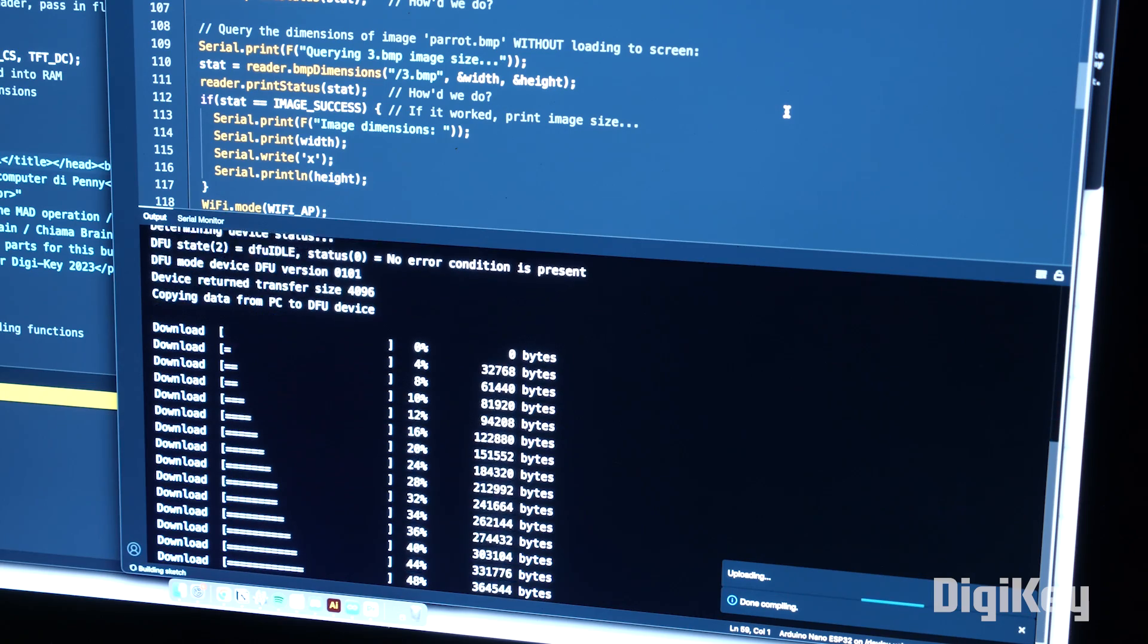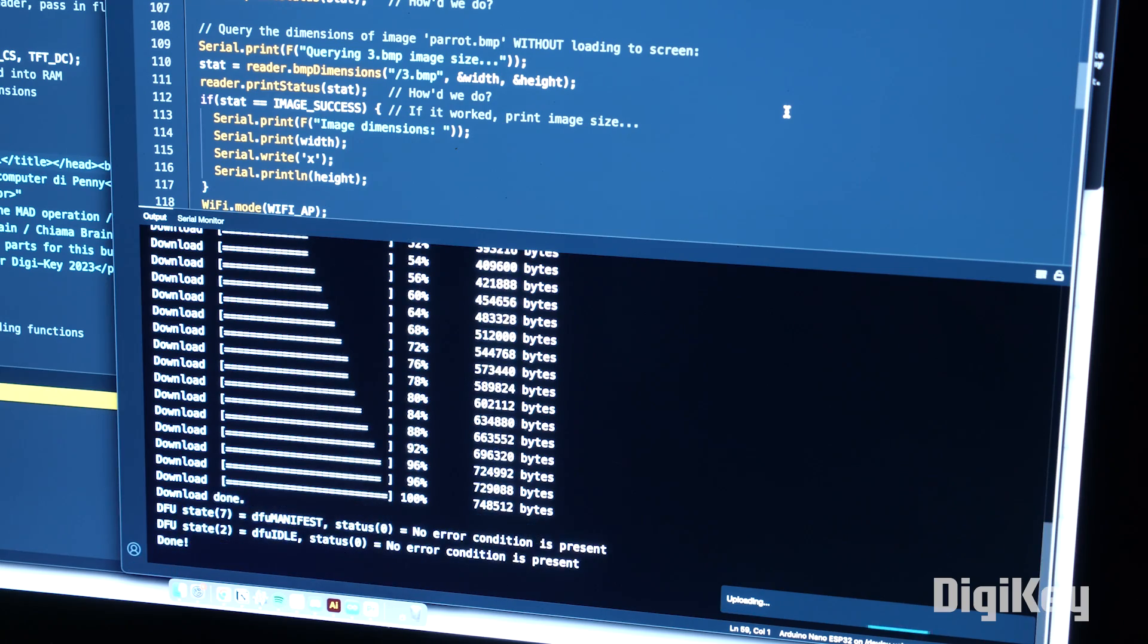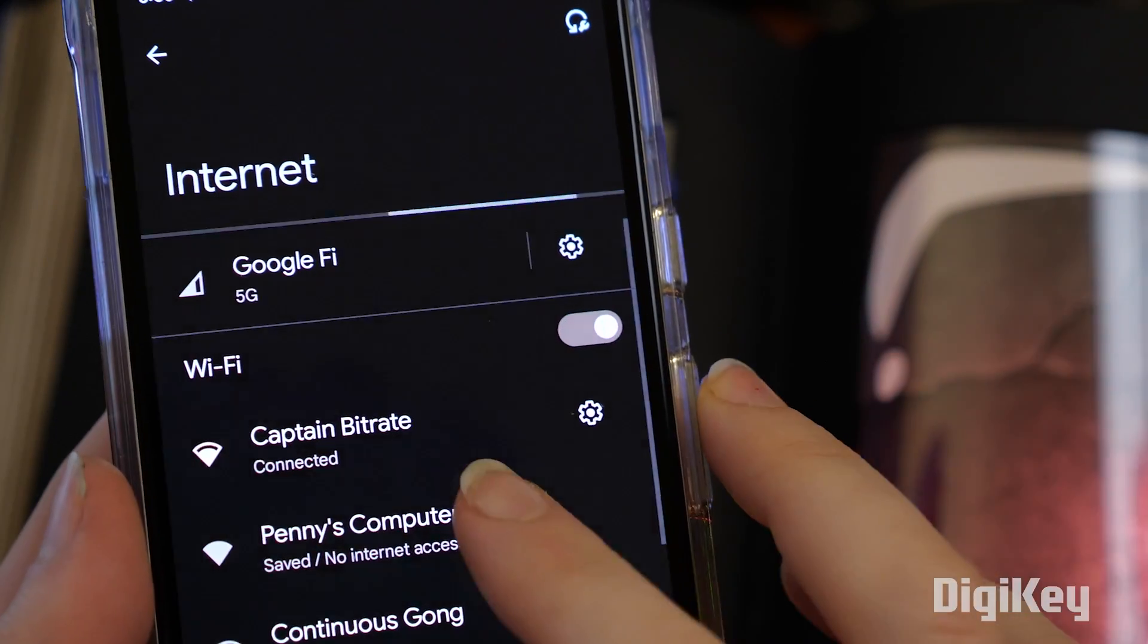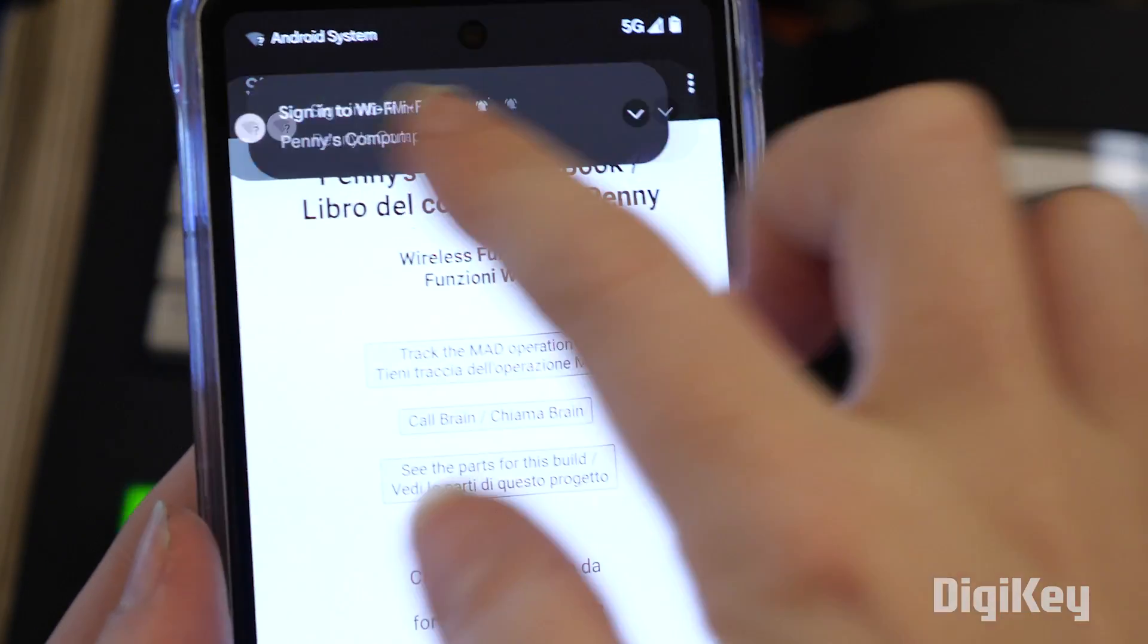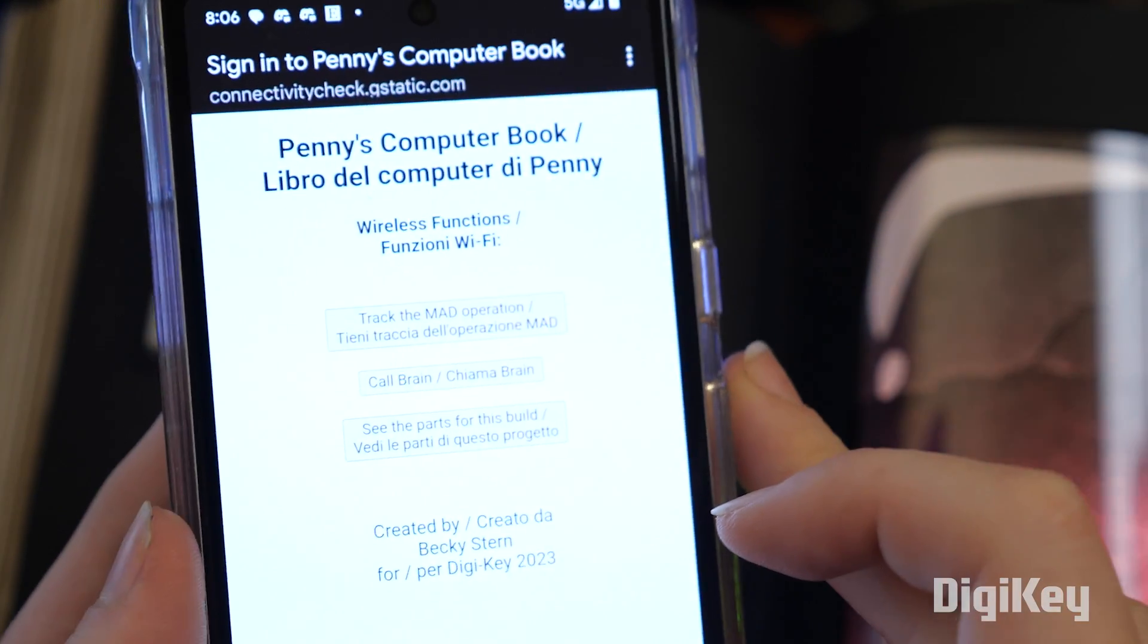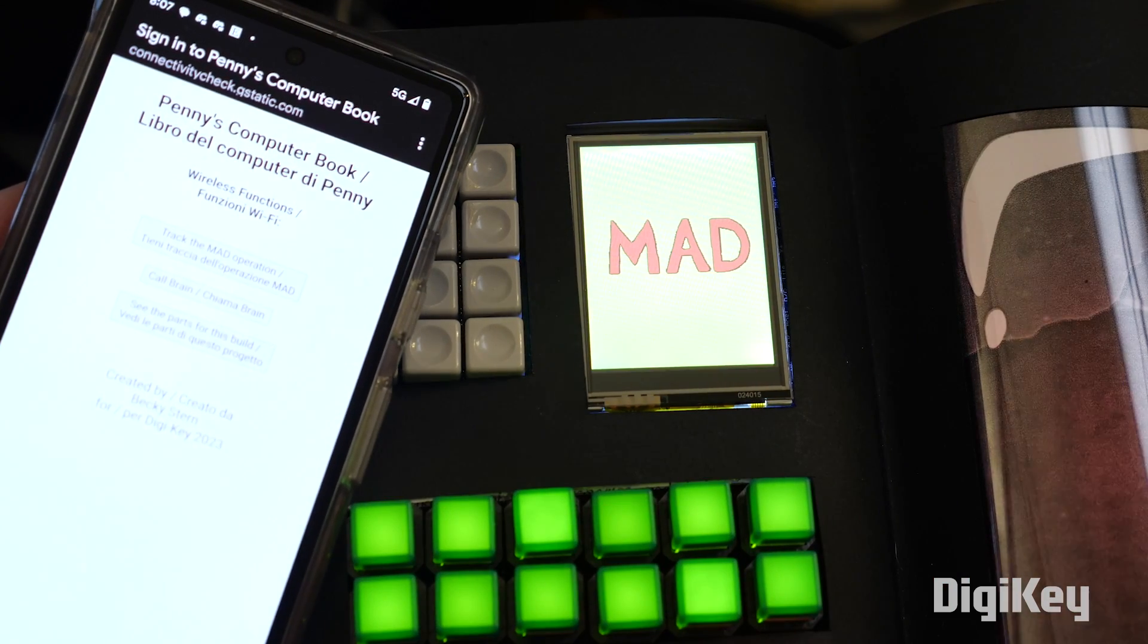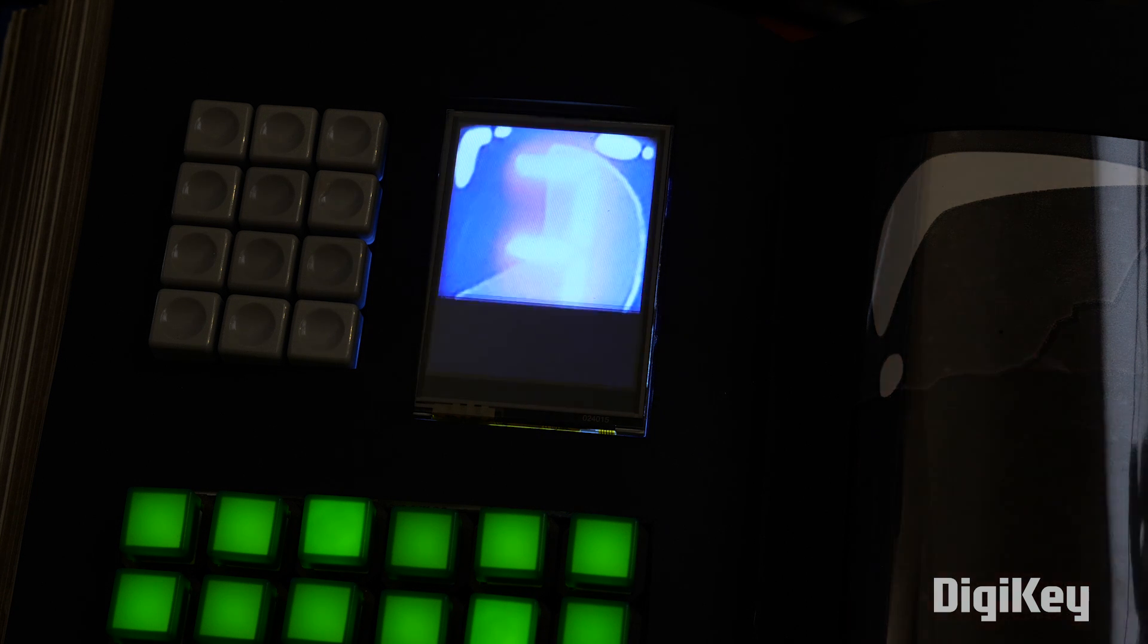More about the Wi-Fi on the Arduino Nano ESP32. The program generates a network you can join called Penny's Computer Book, which launches a captive portal after you join it. And the page you're shown has buttons that control some different outputs on the TFT display, including the MAD graphic, calling Brain the dog, and showing you the components used to build the book.